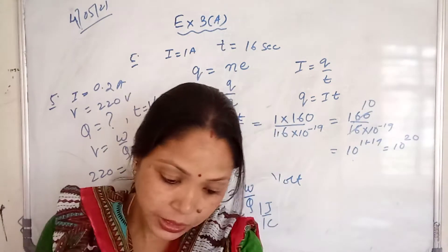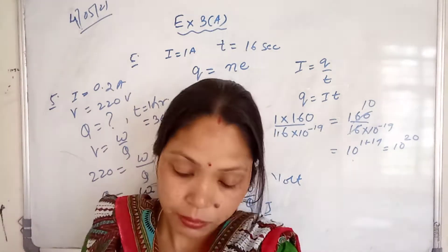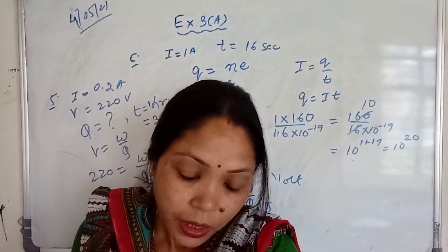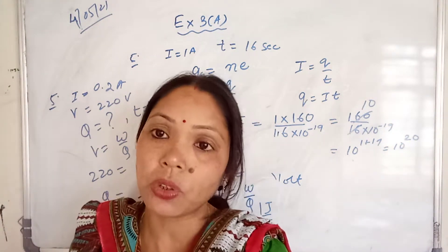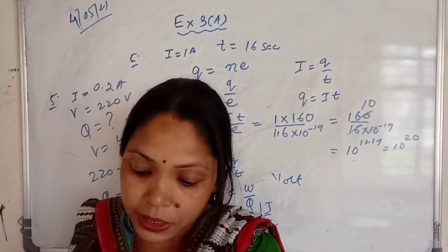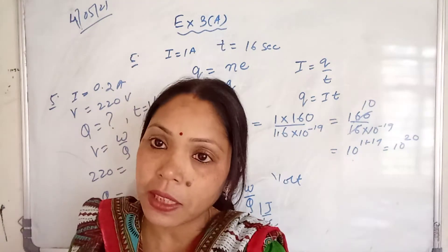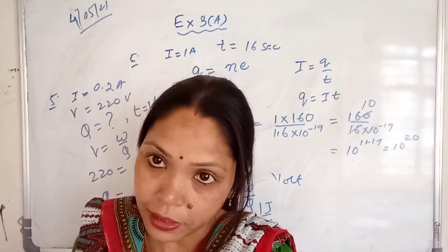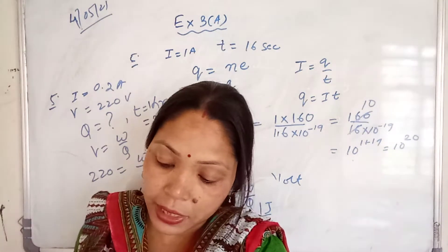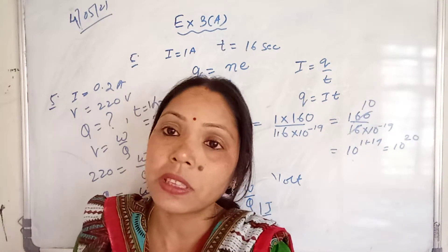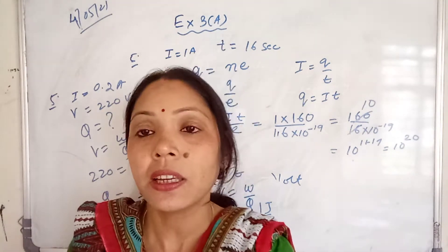Now come to the next short answer type question, type 2. Name an instrument used for measuring the potential difference, that is your voltmeter. How is this instrument connected in an electric circuit? It is connected parallelly. Why does this instrument practically not consume any electric energy in a circuit? Because it is a high resistance instrument.